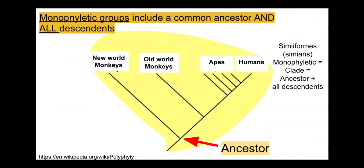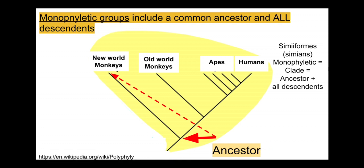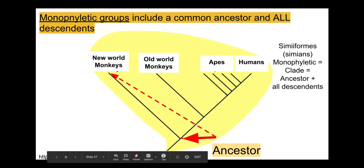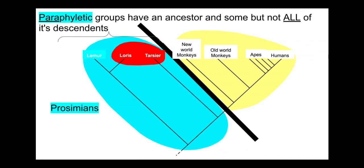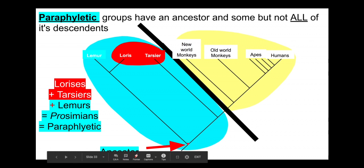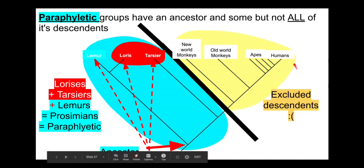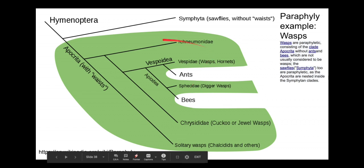Monophyletic groups include the common ancestor and all of its descendants. There's an ancestor represented by a node, and its progeny taxa include Old World monkeys, New World monkeys, apes, and humans — these are the simians or simiforms. They're monophyletic and form a clade. However, prosimians are paraphyletic: that group includes the ancestor, lemurs, lorises, and tarsiers, but excludes all of the descendants that fall on the simian side.